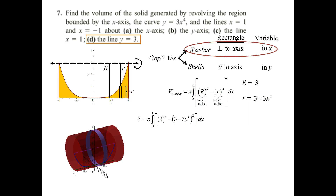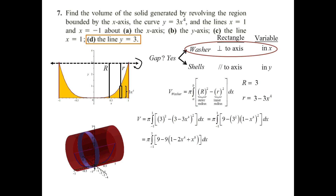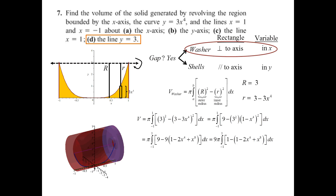We plug in: 3² minus (3 minus 3x⁴)². Remember, you have to square first before subtracting. Pull a 3 out of the second part to make it 3 times (1 minus x⁴), then square. From the first term you get 9; from the inner radius squared you also get a factor of 9. When you square (1 minus x⁴) don't forget the middle term. Pull the 9s out; the 1s cancel, and you're left with 2x⁴ minus x⁸.